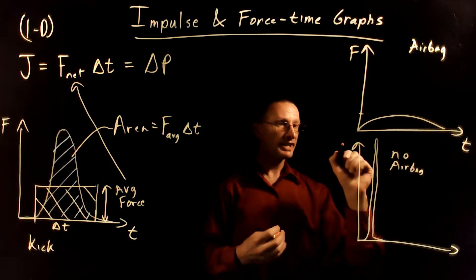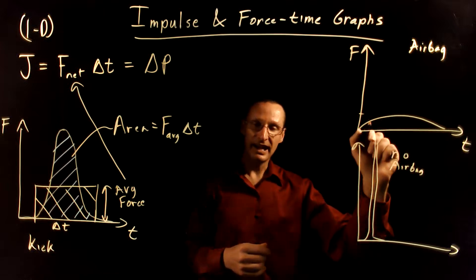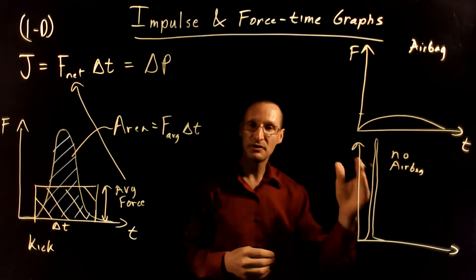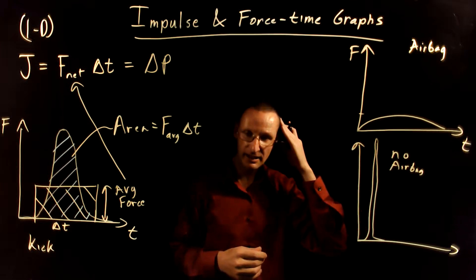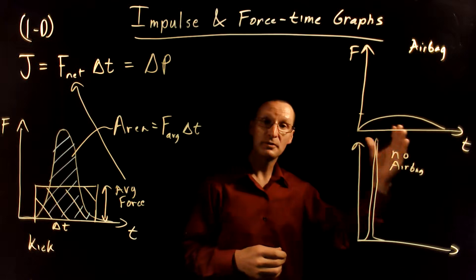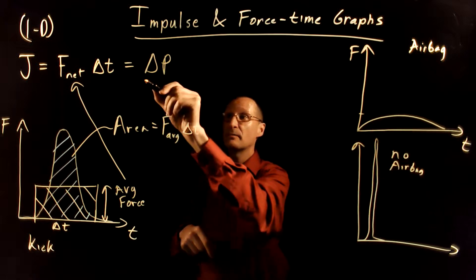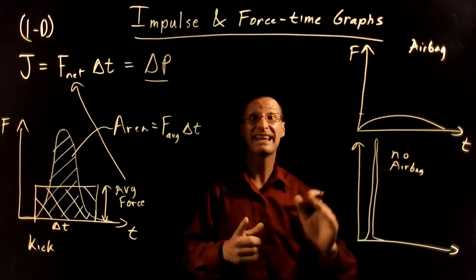Now, the key thing to remember here is that for the dummy's head, in both scenarios, it was going 30 miles an hour before and then it came to a stop. So the change in momentum is the same in both cases.